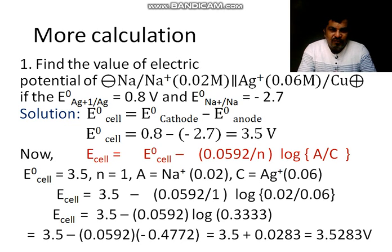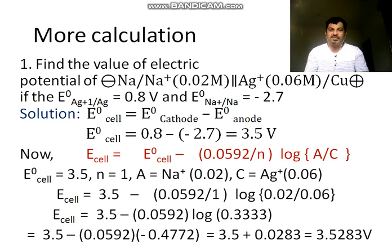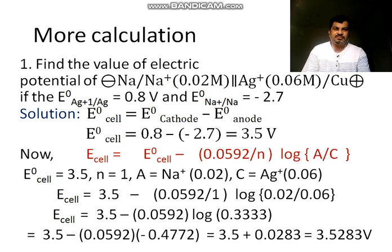Dear students you can see find the value of electric potential of sodium to sodium silver to silver. It should be silver to silver there it is written copper but that you have to take as only. If the electric potential of silver is 0.8 and electric potential of sodium is minus 2.7 then we have to find the cell potential of this cell. So in solution first we are taking as usual our simple formula to find out first step.